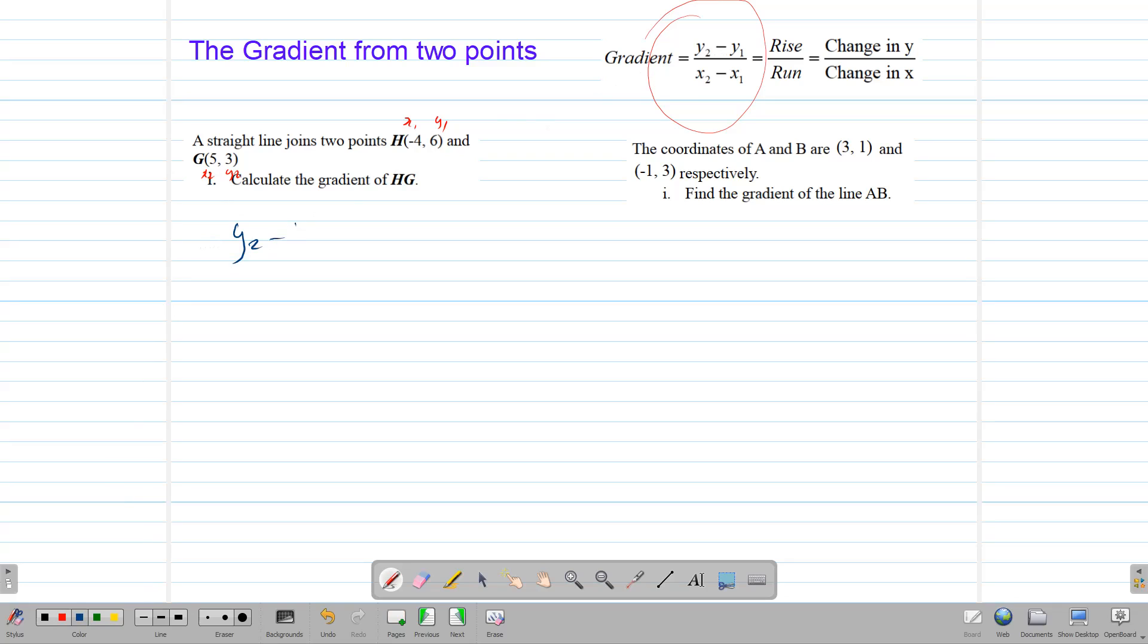So we have y2, take away y1, divided by x2, take away x1, which gives us y2, 3, take away 6, divided by 5, take away 6, is negative 3, and 5, take away negative 4, is 9. This simplifies further down to negative 1 over 3, and that is the gradient for this line.